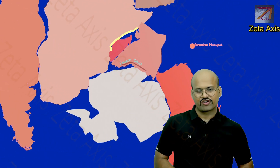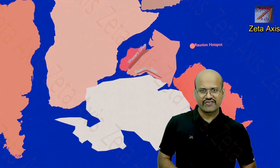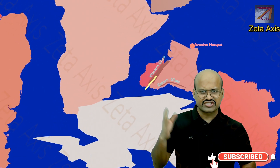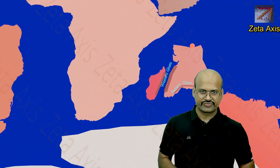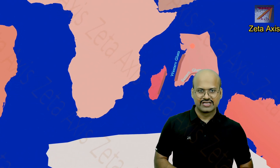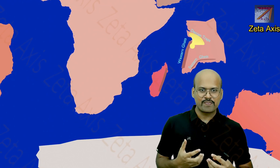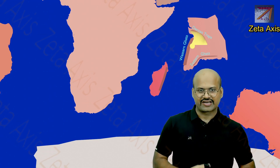In our previous videos we studied about tectonic movement of plates as well as seafloor spreading, and because of this the Pangaea broke down. Our Indian subcontinent, which was attached to Africa, Antarctica, and Australia, got detached and started to move in the northern direction. Here there was the Reunion hotspot, and our Indian subcontinent, as it started to move northwards, came over this Reunion hotspot. The Reunion hotspot started to give out magma which was emitted on the surface of our Indian subcontinent, forming the Deccan Traps.